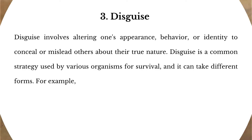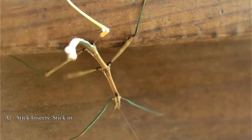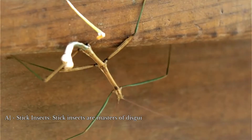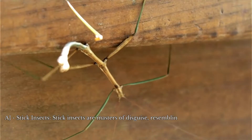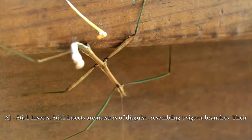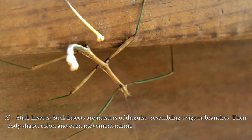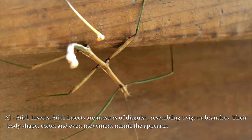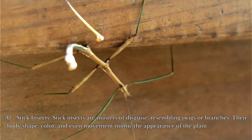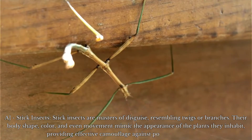For example, a. Stick insects. Stick insects are masters of disguise, resembling twigs or branches. Their body shape, color, and even movement mimic the appearance of the plants they inhabit, providing effective camouflage against potential predators.